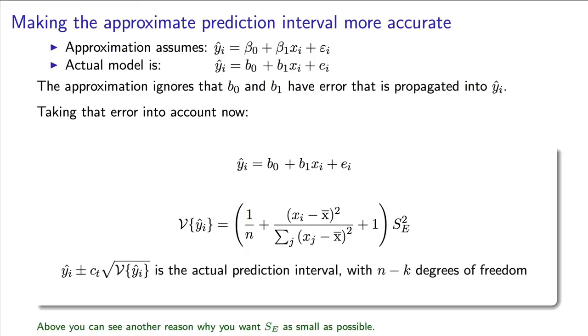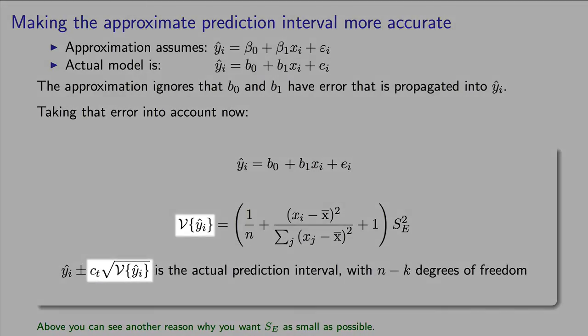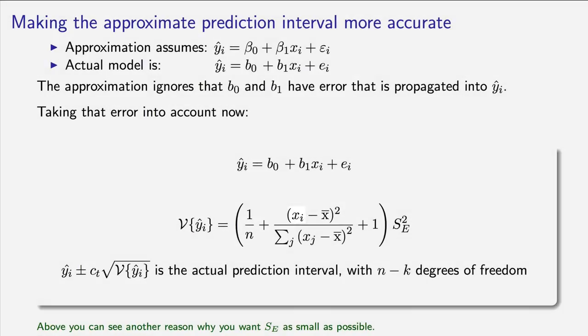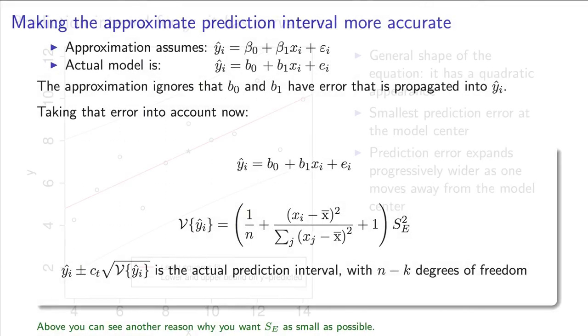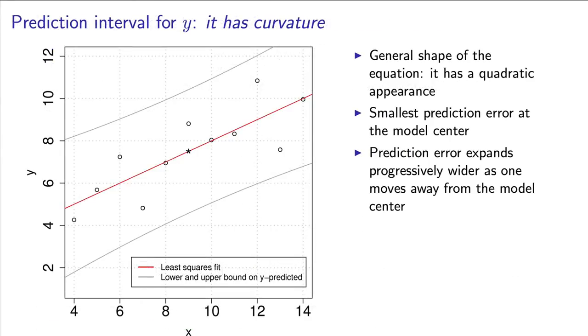The way we use this formula is to ask: what is the prediction interval for yi given a new value of xi? That's my input xi. Now what we can do is plot this variance of yi over all values of x, and we will notice then that this equation has a quadratic shape.